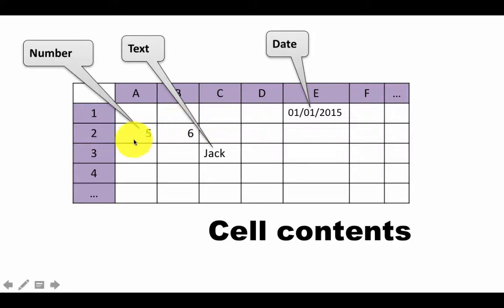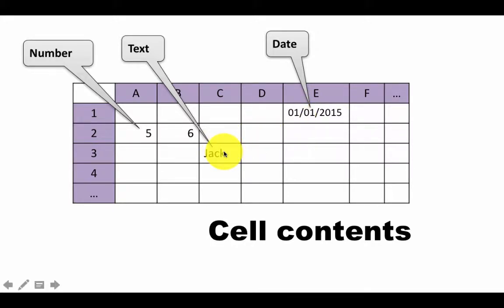These cell contents are what are called literals, in the sense that what you see in the cell is what it has. The cell content displays literally as what you put into the cell. It may not seem obvious yet why I'm emphasizing literals — very shortly you will see why. Numbers, text, dates, and so on are literal values that we put into a cell.